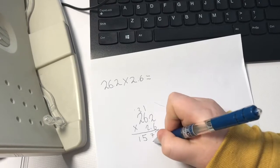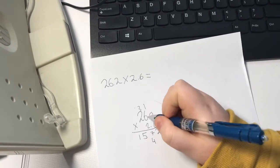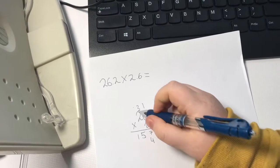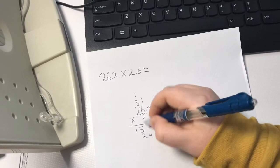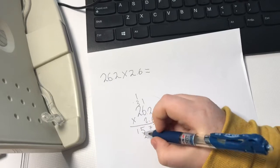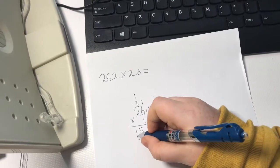Now, 2 times 2 will be 4, 6 times 2 will be 12, 2 times 2 will be 4 plus 1 equals 5.